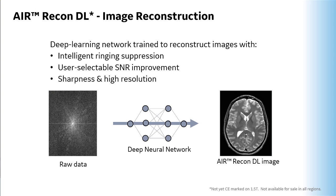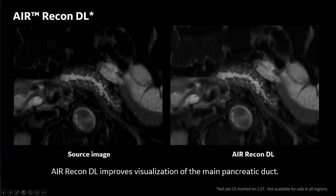AirReconDL is a deep learning-based reconstruction to suppress noise on the image. Without going into the details of the method, this reconstruction provides three advantages over conventional reconstruction. Number one, ringing artifact or truncation artifact is suppressed. Number two, SNR is improved without any compromise. Number three, it gives sharpness of objects in the image, resulting in higher spatial resolution. Here is an example: by adding AirReconDL, SNR is improved and the image is very clear. Look at the small branches of the pancreas — they are clearly visualized in the image with AirReconDL.